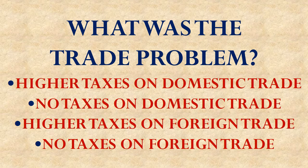Third question: what was the trade problem in the Articles of Confederation? Was it that there were higher taxes on domestic trade than foreign trade, no taxes on domestic trade, higher taxes on foreign trade than domestic trade, or no taxes on foreign trade? They taxed both foreign and domestic trade, but the problem is that taxes on domestic trade were actually higher, making doing business among these states very difficult and preventing the economy from doing better.